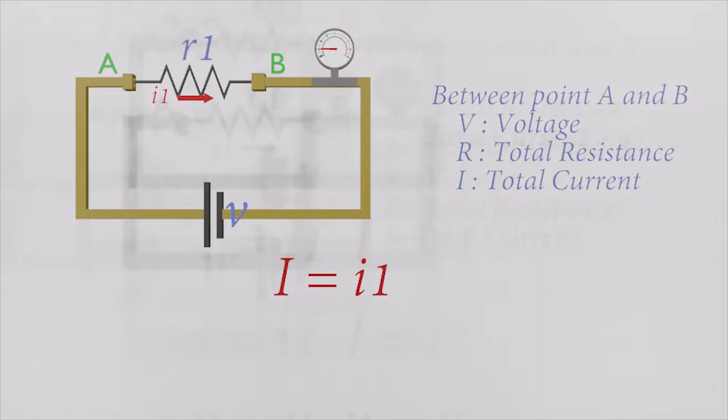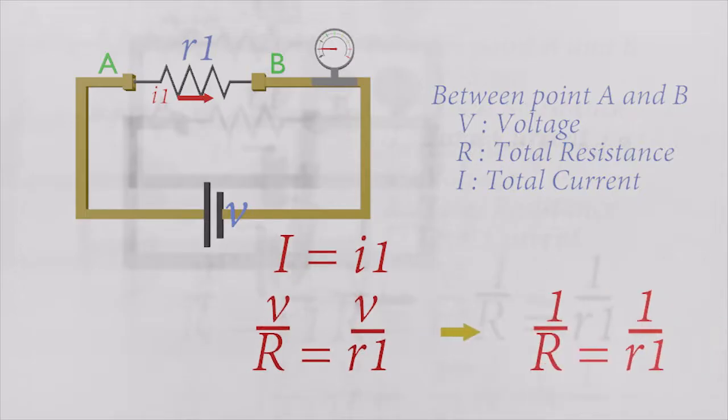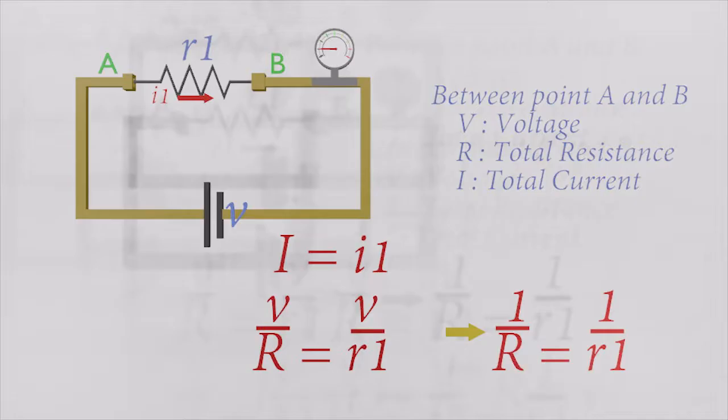Using Ohm's law, we can replace the current by using voltage and resistance. Now we can remove the term voltage from both sides. We are getting an equation like this.